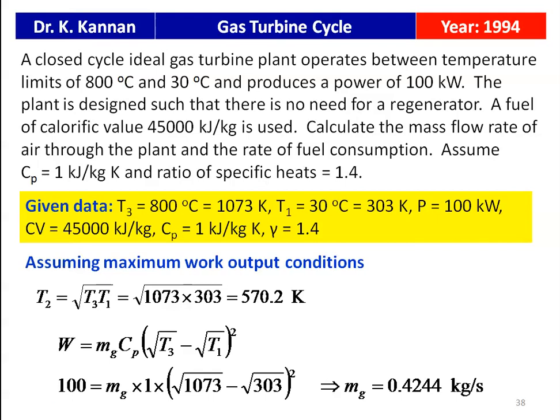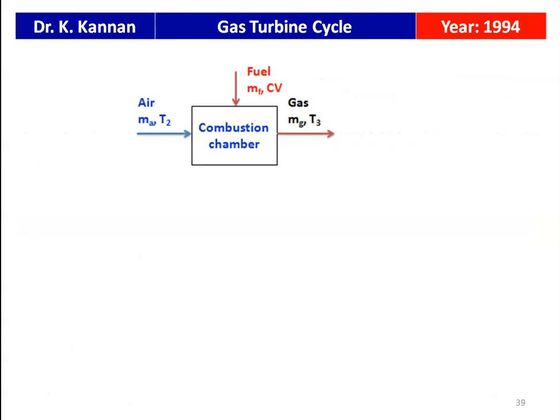For maximum work output, W = Mg × Cp × (√T3 − √T1)². Given power = 100 kW = Mg × 1 × (√1073 − √303)², solving gives Mg = 0.4244 kg/s. The mass of gas flowing through the turbine is 0.4244 kg/s.